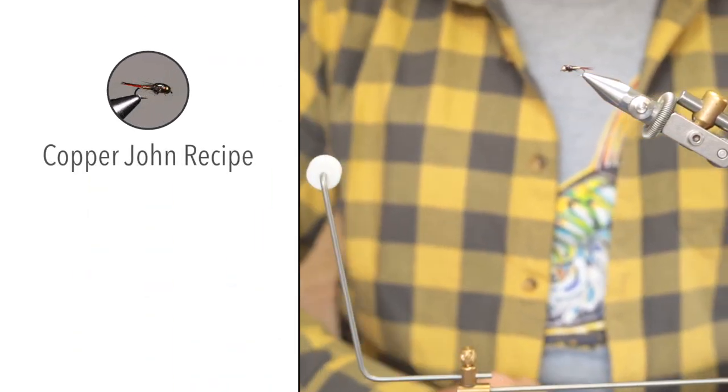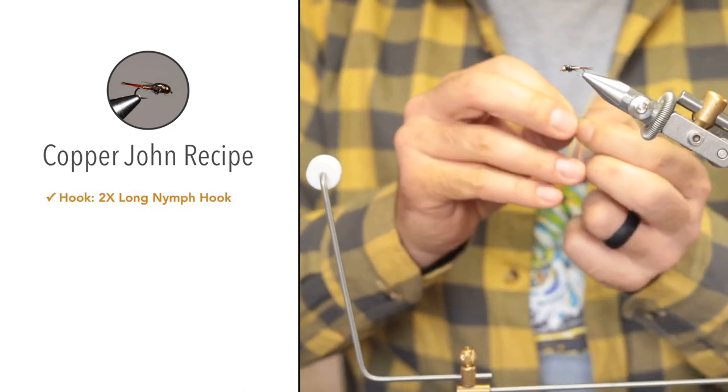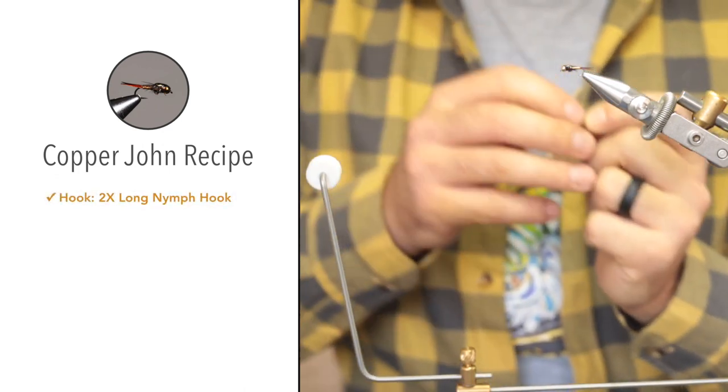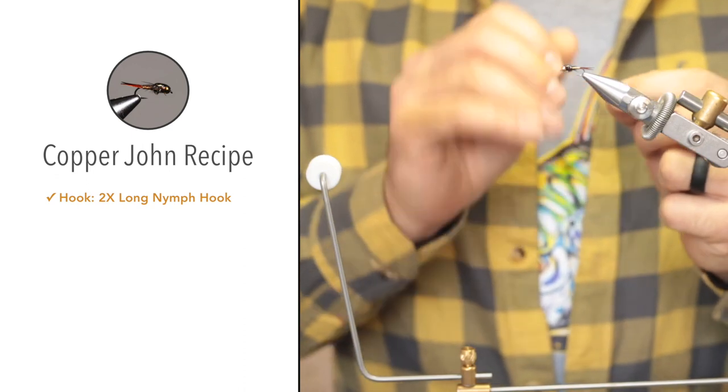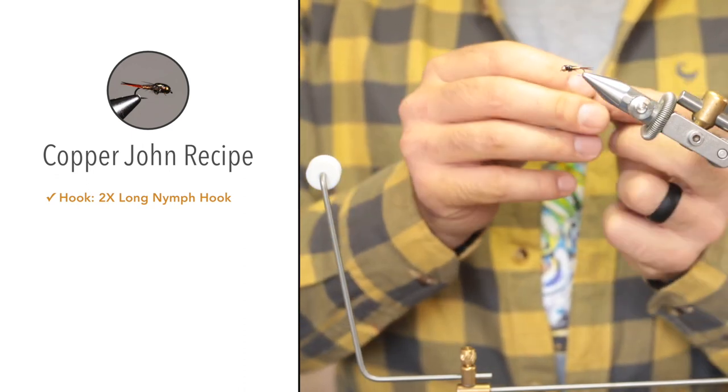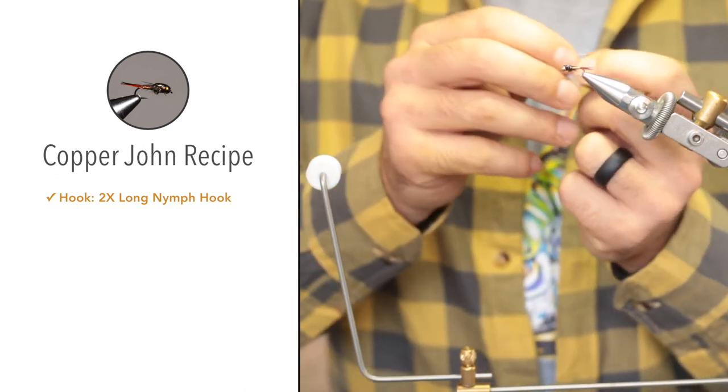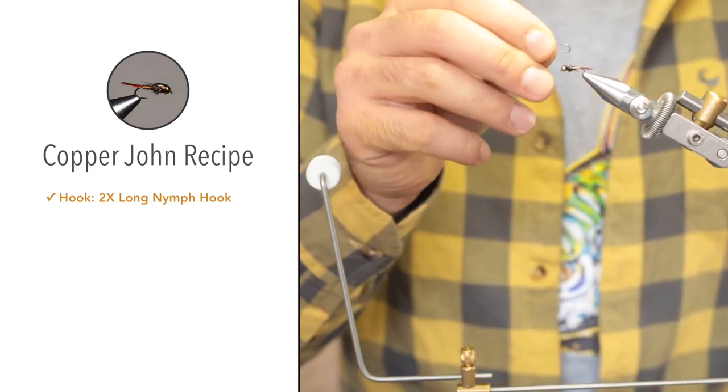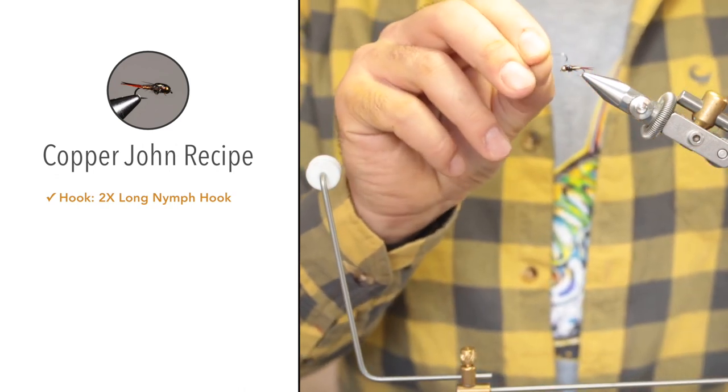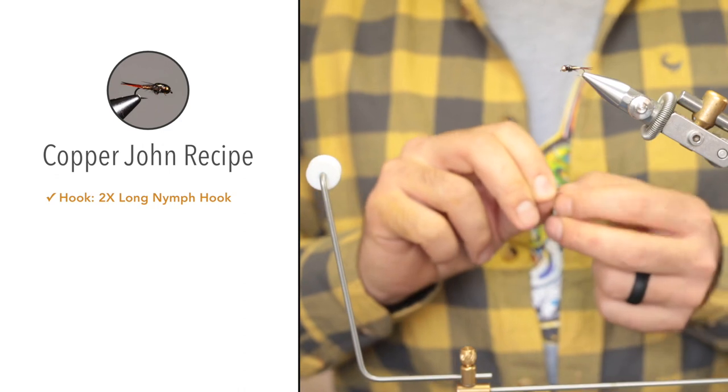The materials we'll be using: first off, the hook—a standard nymph hook that is 2X long and about 1X or 2X thick wire, so it's quite a thick wire and a long shank nymph hook. This is a size 14.